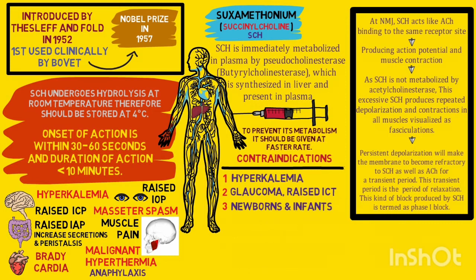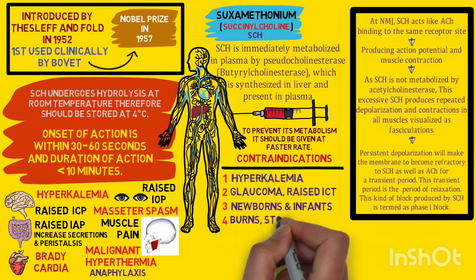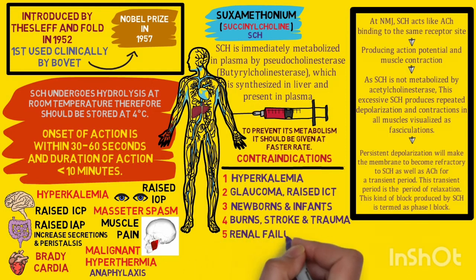In newborns and infants, regenerating nerves lead to extra-junctional receptors, causing succinylcholine to act on more receptors and produce more hyperkalemia. Similarly, renal failure, up to 2 to 3 months after trauma, up to 6 months after stroke, and up to 1 year after burns — in these conditions, the denervated or regenerating nerve develops extra-junctional receptors, again producing significant hyperkalemia. Renal failure per se is not a contraindication, but it is often associated with hyperkalemia. In prolonged intra-abdominal infection, acidosis is inevitably associated with hyperkalemia.